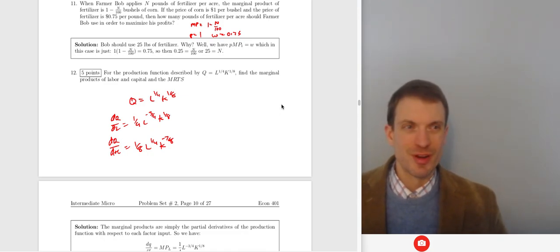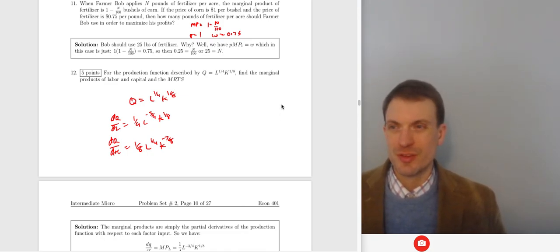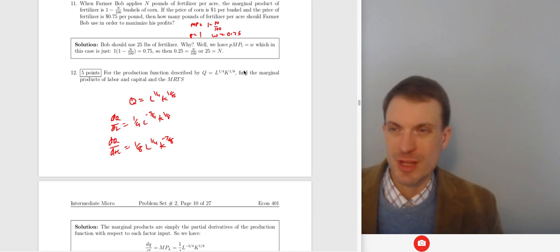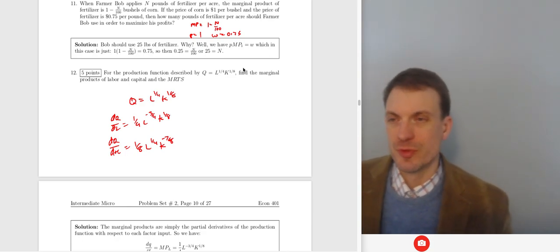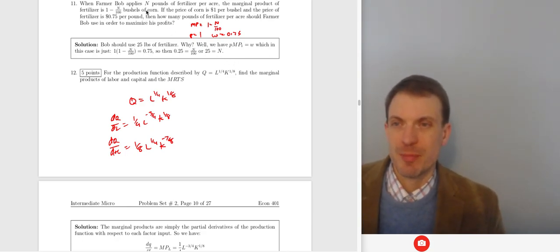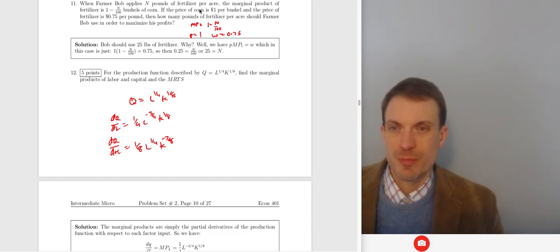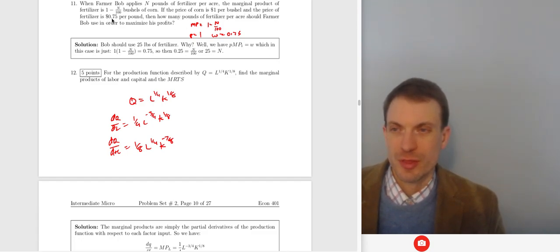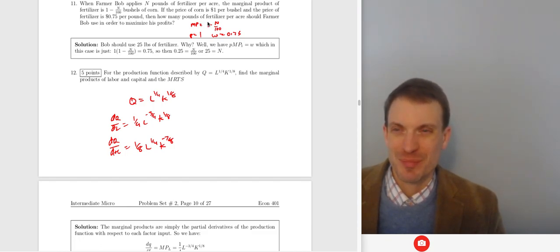Hello and welcome everyone. In this video we are going to walk through some profit maximization exercises relevant for intermediate micro problem set two. First question: Farmer Bob applies n pounds of fertilizer per acre. The marginal product of fertilizer is 1 minus n over 100 bushels of corn. The price of corn is one dollar per bushel, the price of fertilizer is 75 cents per pound. How many pounds of fertilizer per acre should Farmer Bob use to maximize profits?